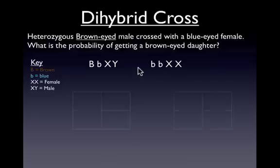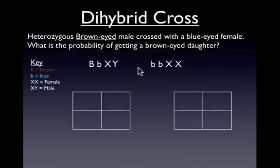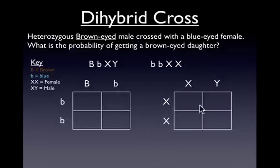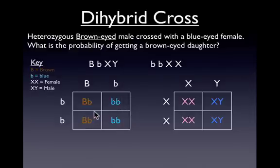The question is: is there another way to do this without FOILing out his gametes and then crossing with mom? The answer is yes — what if we worked out two separate Punnett squares? On the left, let's just focus on eye color, and on the right, let's focus on sex. You can see that we have a 50-50 chance to get brown eyes and a 50-50 chance to get a boy or a girl.